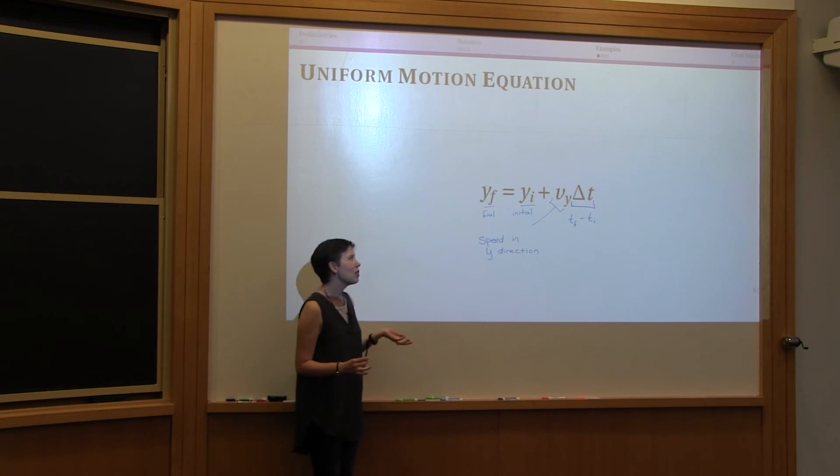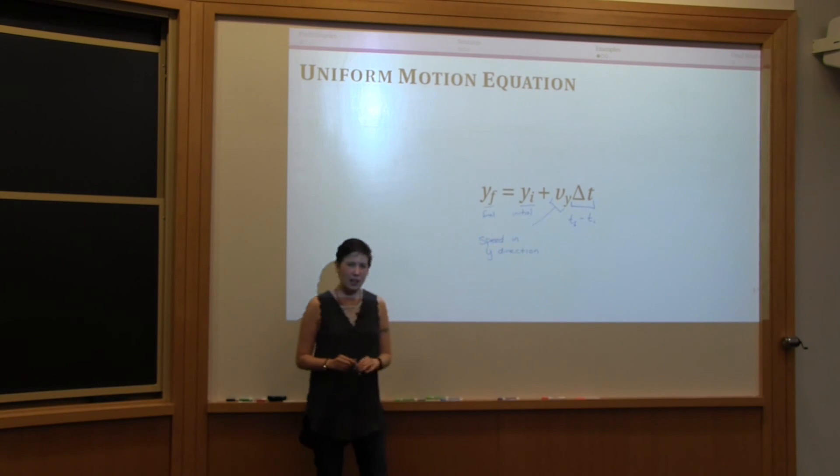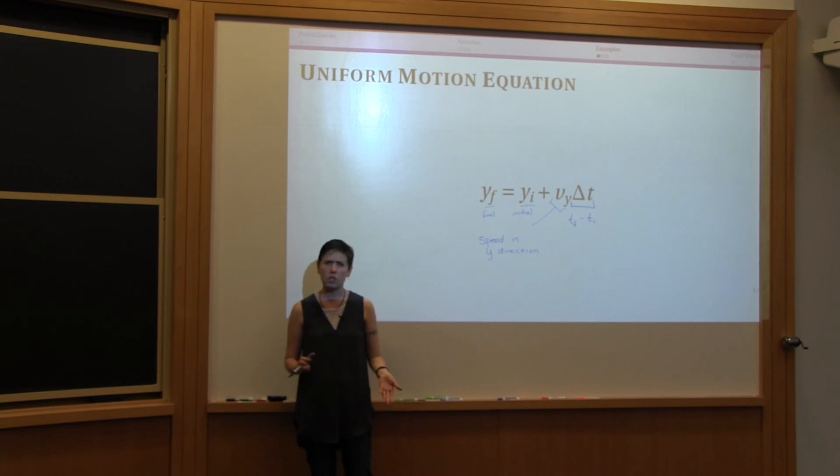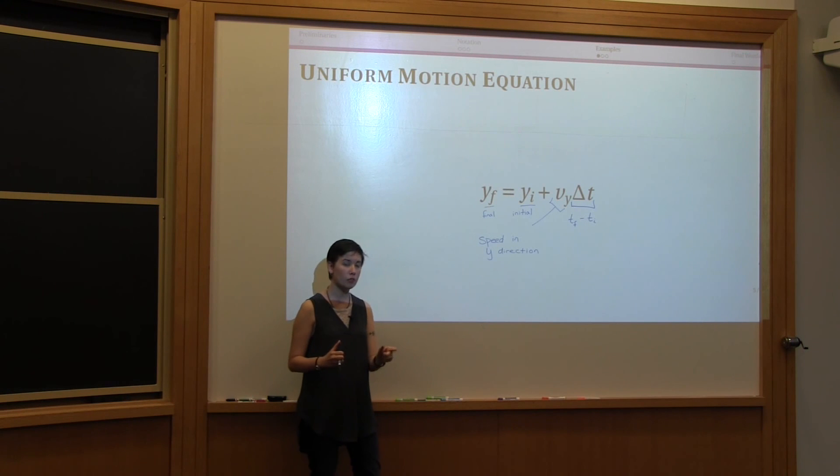So if you were to suddenly switch the subscripts and have this be i and this be f, that actually tells you something completely different, since now you're saying that the initial position of an object is related to the final position of the object and the speed. Now there is a mathematical way of writing that equation, but if you just flip these subscripts, that would be incorrect here. So it's important to be careful about your subscripts since there is meaning in them.